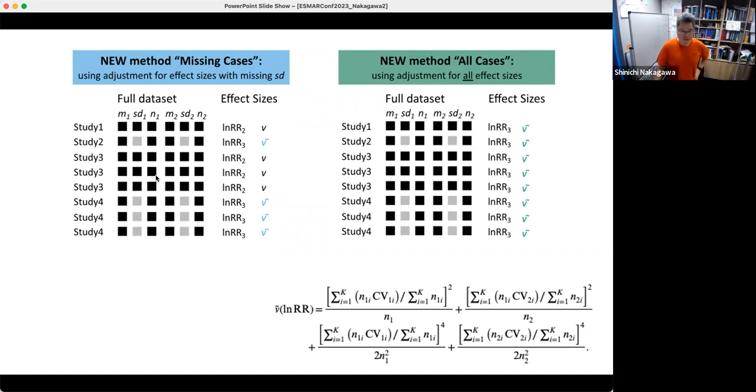You've seen this before. Gray areas are missing data. And we use this sampling variance. Let's call it V tilde. That's our estimator. And those missing standard deviation, we replace with our V tilde for all cases method. We use for all, regardless if it's missing SD or not, use this V tilde for all the studies, or all cases.